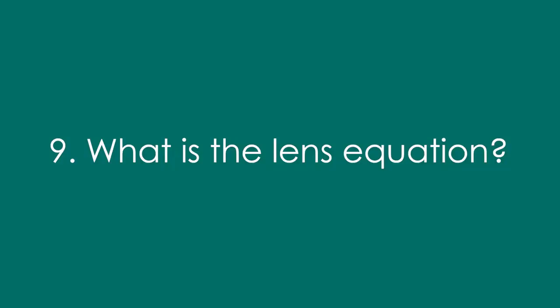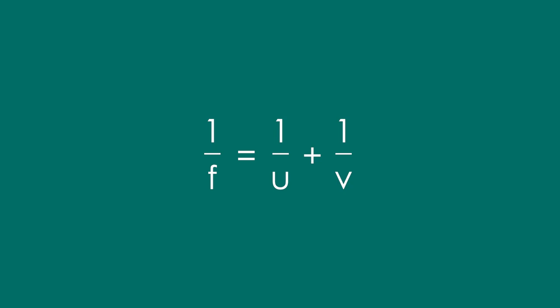Just a few A-level questions to finish off. What is the lens equation? 1 over F equals 1 over U plus 1 over V. 1 over focal length, 1 over object distance, 1 over image distance.